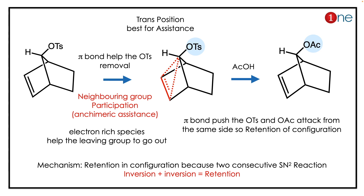The answer lies in neighboring group participation. The double bond can assist the OTs leaving, so OTs leaves and you have acetate formation. Since the double bond is trans to the OTs, it's a perfect position for assistance, so OTs removal is easy. The important fact here is the retention and inversion configuration via a normal SN2 reaction, since neighboring group participation occurs — giving a final product with retention and inversion configuration.